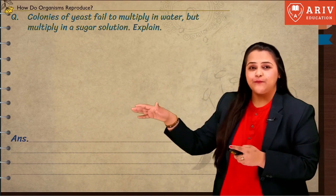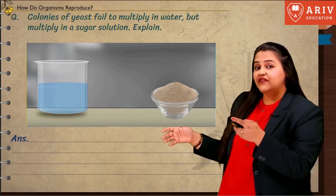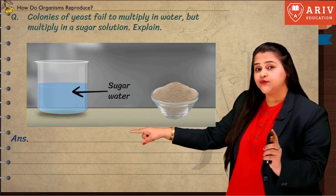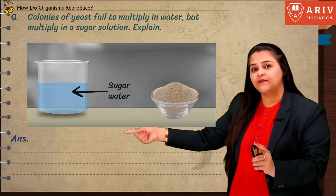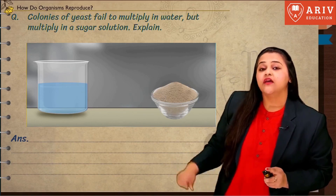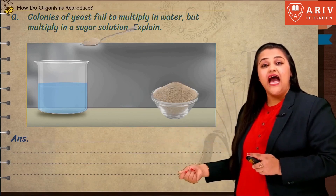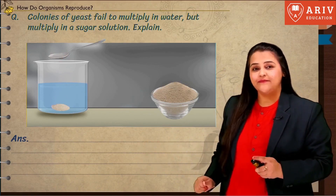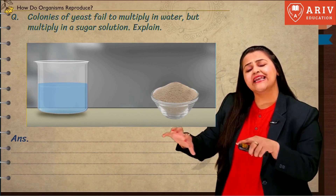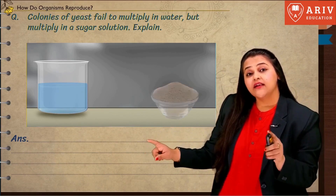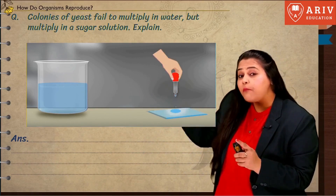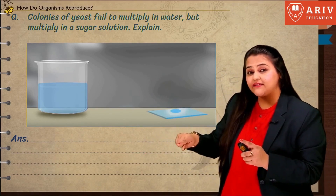Now let's see an experiment. We have water along with sugar — not just water, but water along with sugar — and here we have yeast. You take a spoonful of yeast and put it inside the sugar water, and mix it completely until it dissolves. Then you take a glass slide, take a drop of that sugar solution along with the yeast, and put it on the slide.